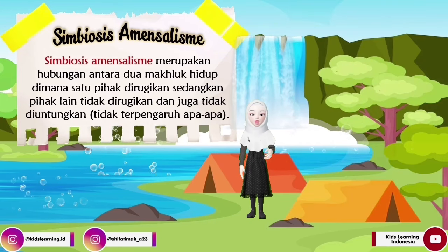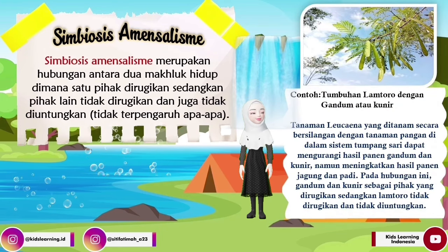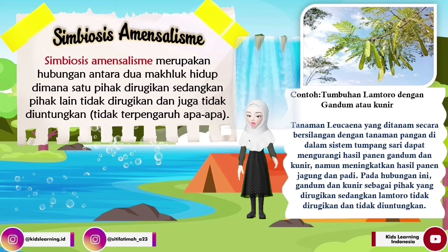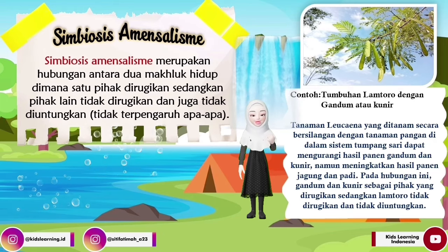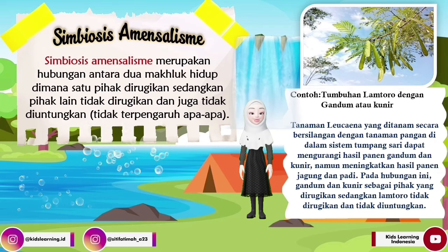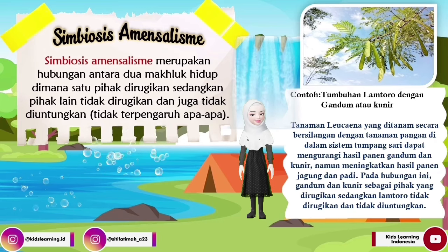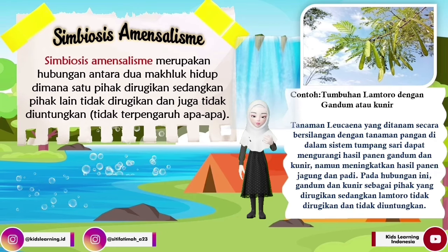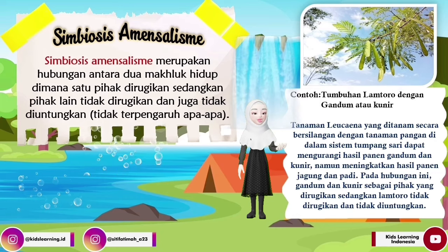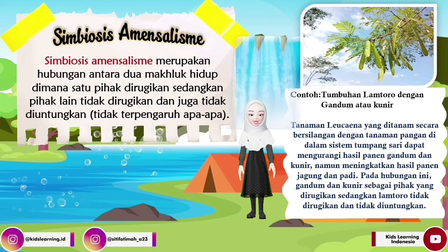Oke teman-teman, contoh selanjutnya yaitu ada tumbuhan lamtoro dengan gandum atau kunir. Tanaman lamtoro yang ditanam secara bersilangan dengan tanaman pangan di dalam sistem tumpang sari dapat menurunkan hasil panen gandum dan kunir, namun meningkatkan hasil panen jagung dan padi. Pada hubungan ini, gandum dan kunir sebagai pihak yang dirugikan, sedangkan lamtoro tidak dirugikan dan tidak diuntungkan.